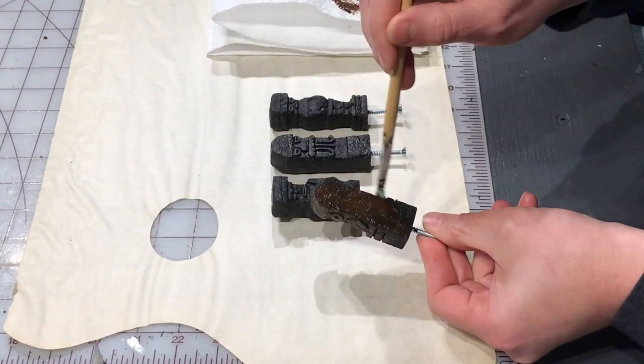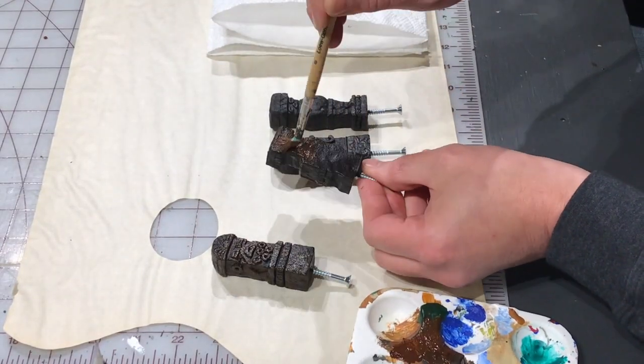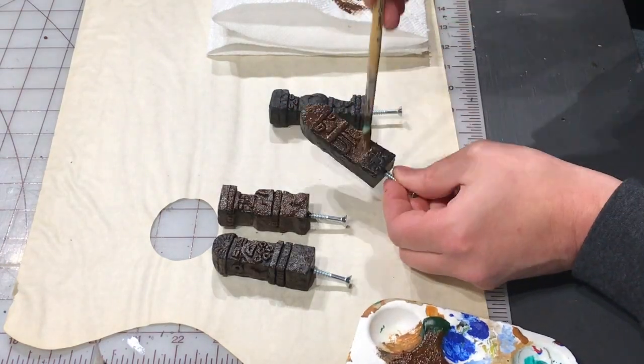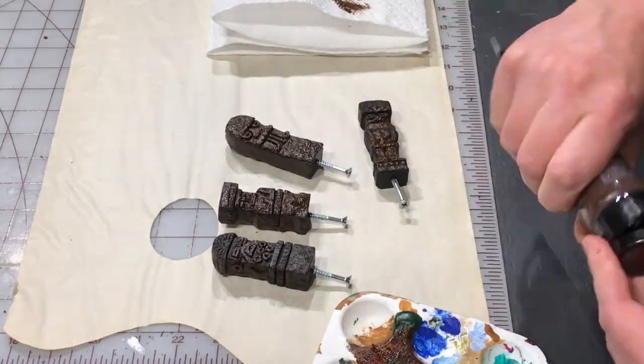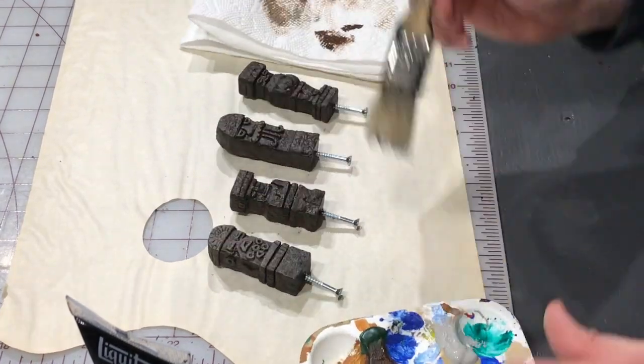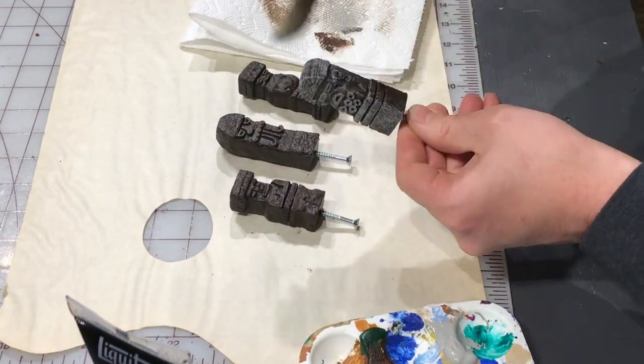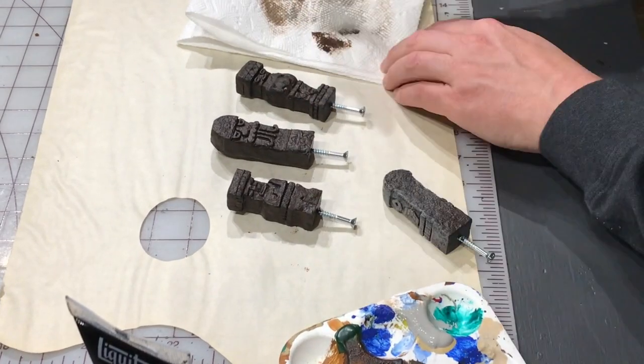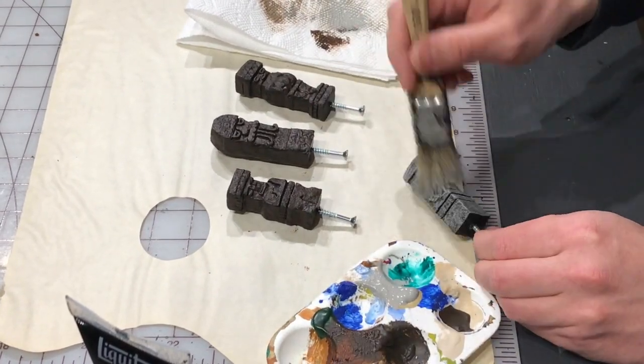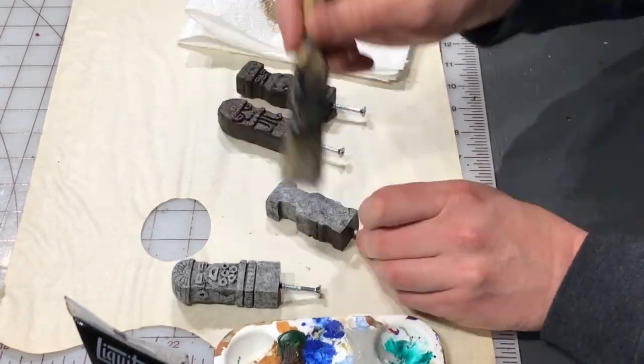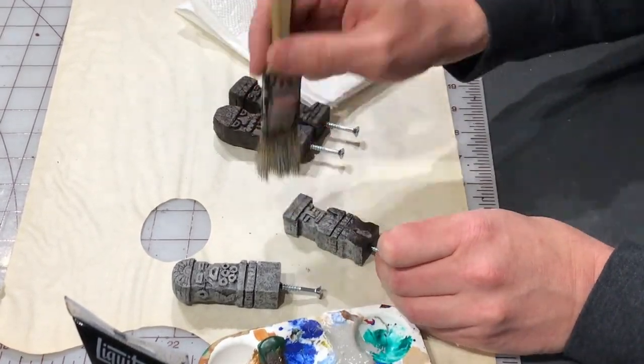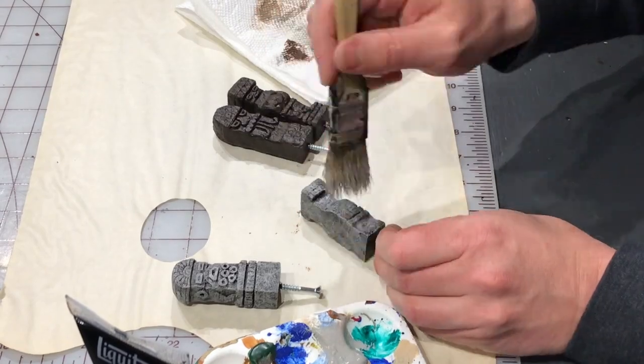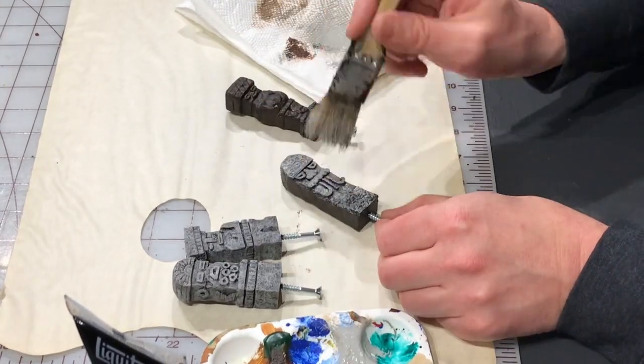The next step, I'm using a burnt umber, giving a brown undercoat that will just help set the tone of the overall piece. Once that's dry, I'm going over with a dry brush of a gray. With a bit of a stippling pattern rather than just a dry brush swipe feel, the stippling adds more of the granite stone feel.